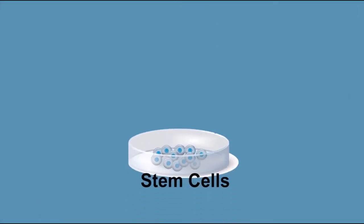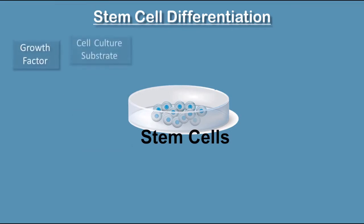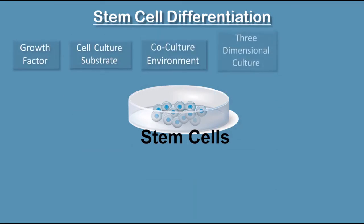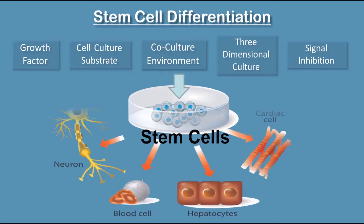The process of stem cell differentiation is that an unspecialized stem cell transforms into a particular type of cell to form a specialized tissue. The stem cells are exposed to chemical or physical signals to cause cellular differentiation, such as growth factor, cell culture substrate, co-culture environment, three-dimensional culture and signal inhibition.